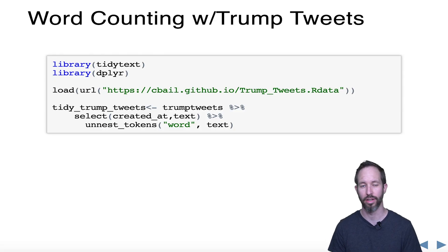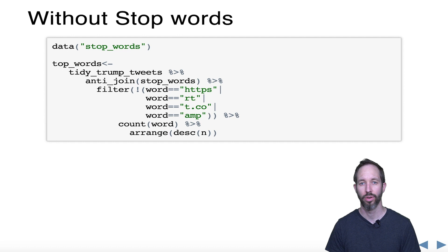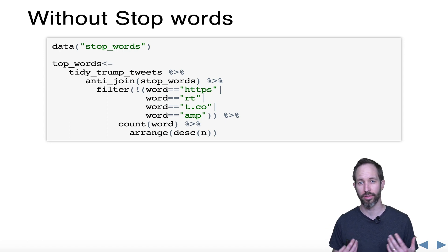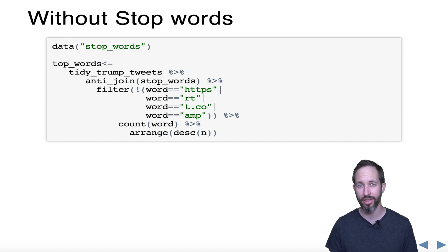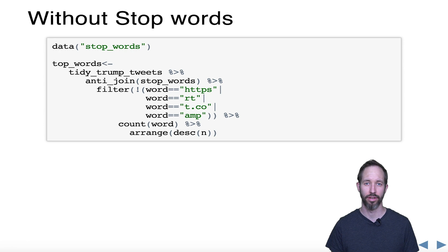Let's look at an example. We're reading in some tweets from President Trump that we collected in a previous video — check out my video on APIs if you haven't done that already. We're using tidy text to unnest the tokens, meaning we create a dataset where each row is a unique word. We then drop stop words like 'and', 'the', and 'but', as well as fairly meaningless Twitter-specific words like RT, HTTPS, t.co, and amp.